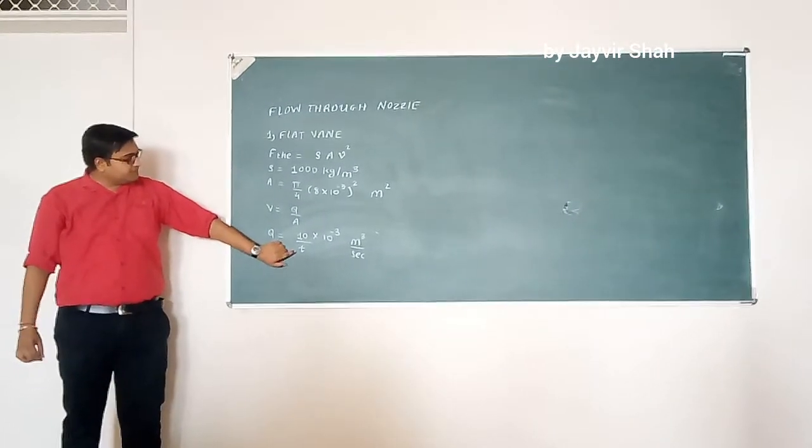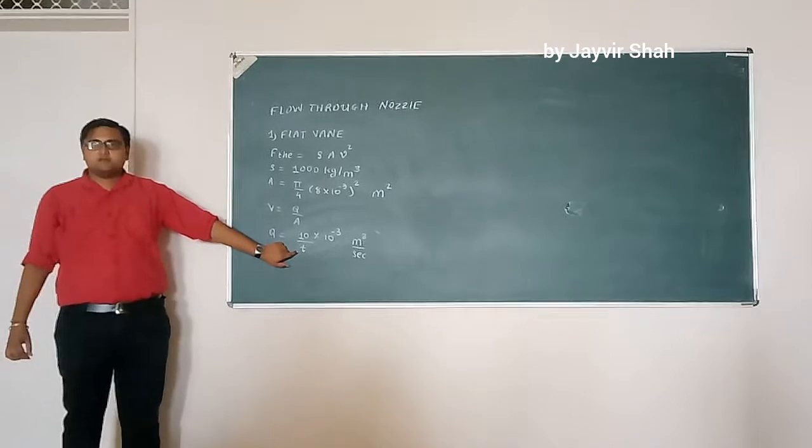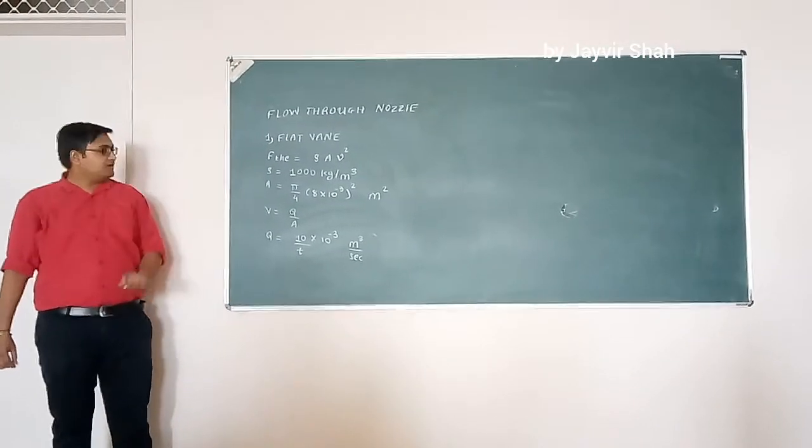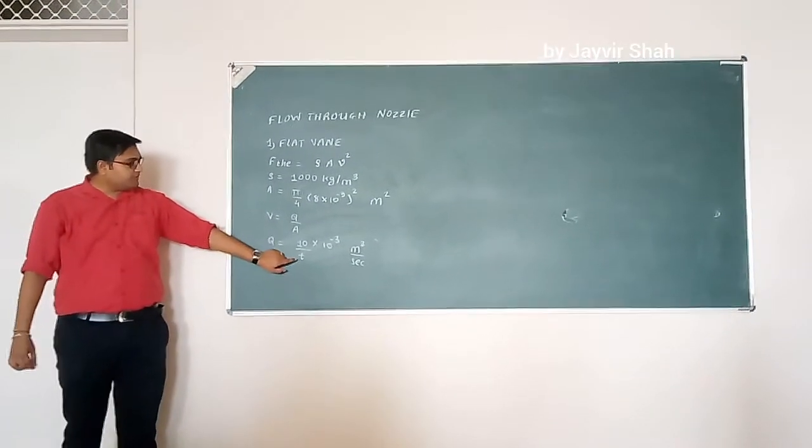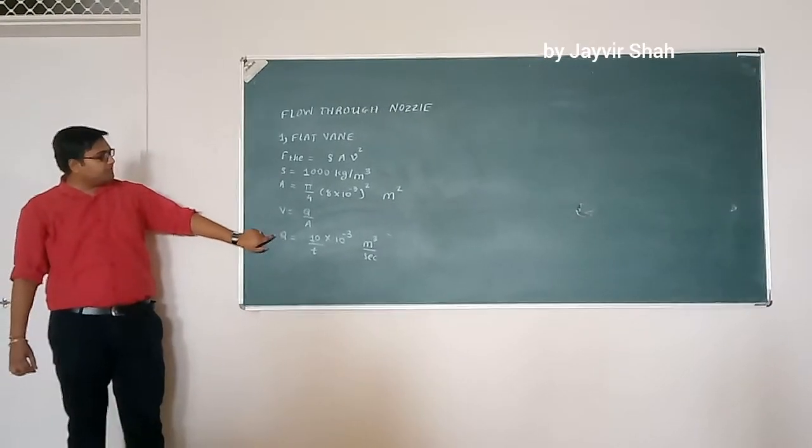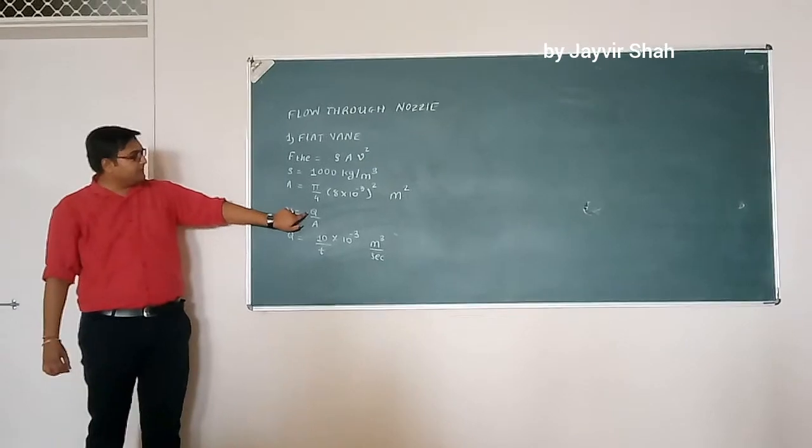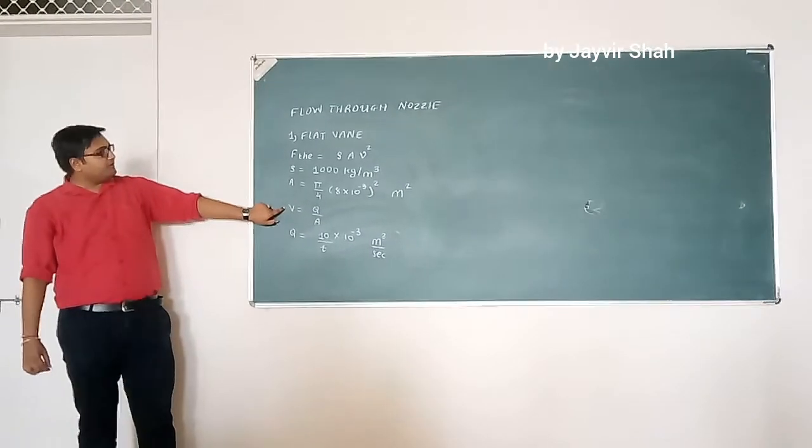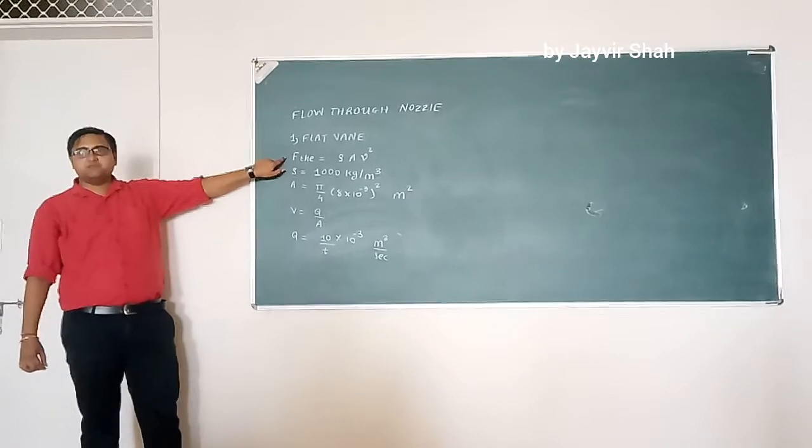So, the only thing we need to measure is the time. If we are knowing the time, then we are going to find out the value of Q. If we are able to find out the value of Q, we are able to find out the value of velocity, and I give it to F30.